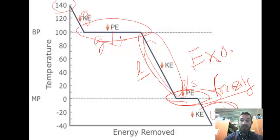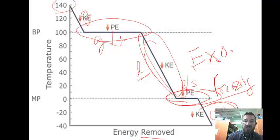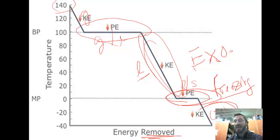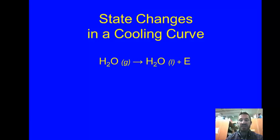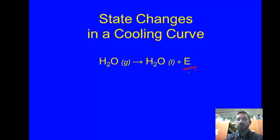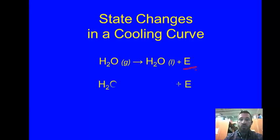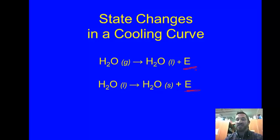Then this last section is just taking our solid ice and making it colder and colder. Notice energy is removed throughout. So if we were to write this process, energy would be a product. A gas going to a liquid is condensation — energy is removed, so it's an exothermic process. And a liquid going to a solid is freezing, which is also exothermic. Both of these are exothermic.